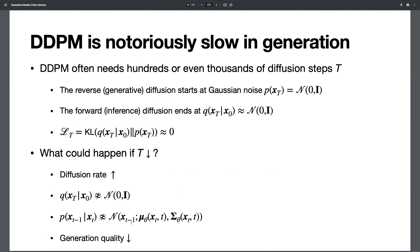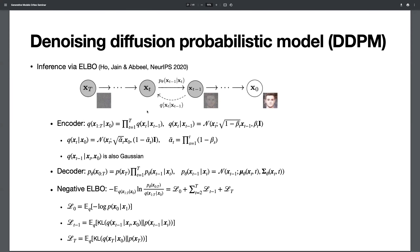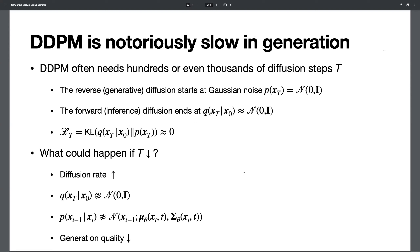The key message is: to generate a single image, you need to go through the network — with parameters θ — capital T times. T is typically 1,000, so you need to go through the network 1,000 times, making it not scalable for generation. It takes maybe 20 seconds to generate a single image, which is not realistic for real-time deployment, limiting its applicability to various practical applications.